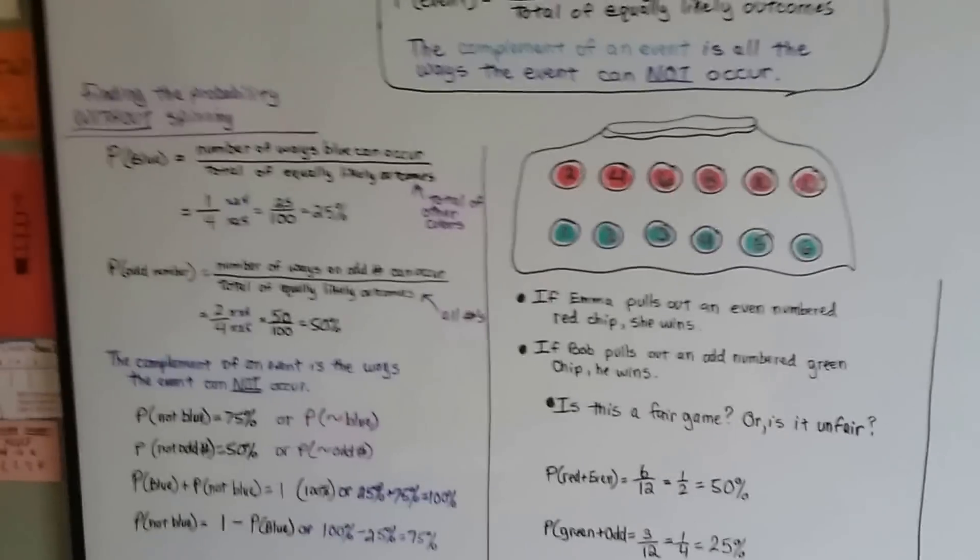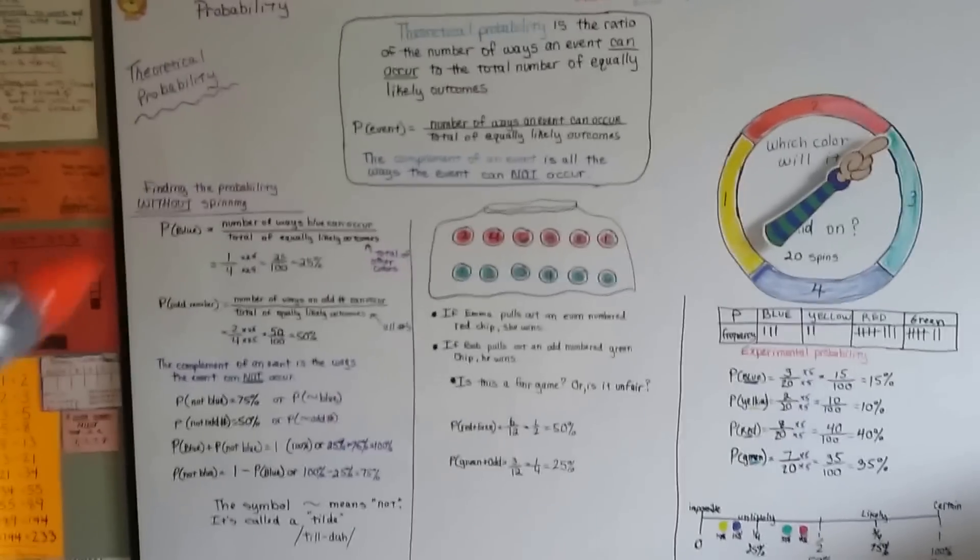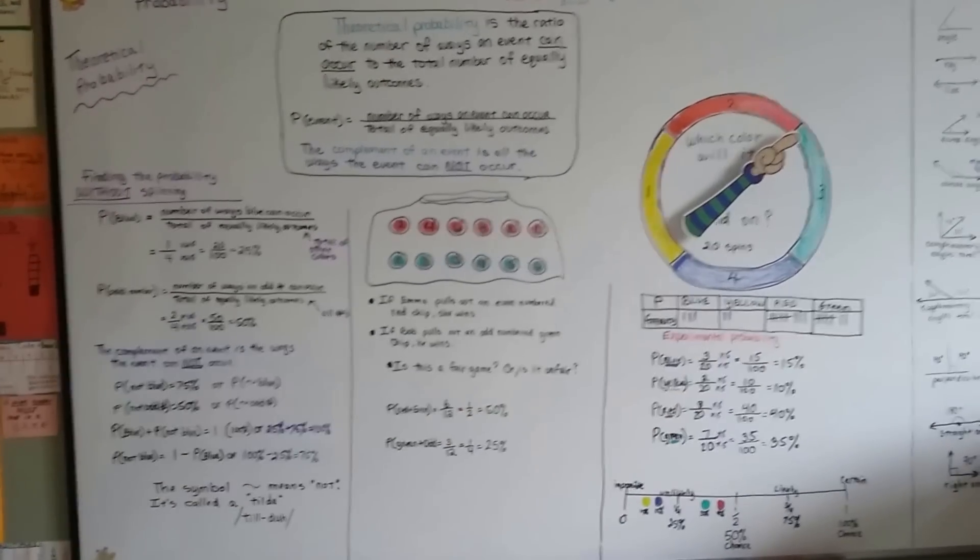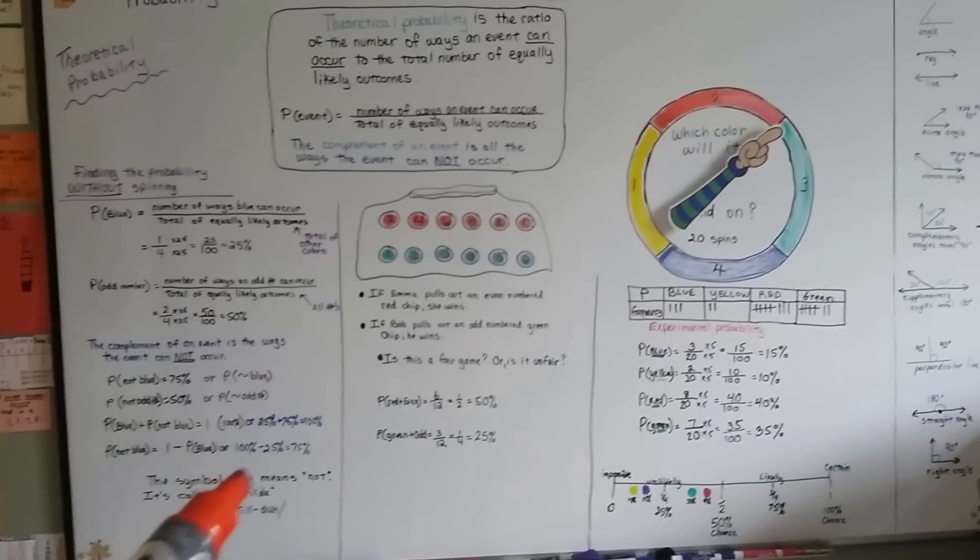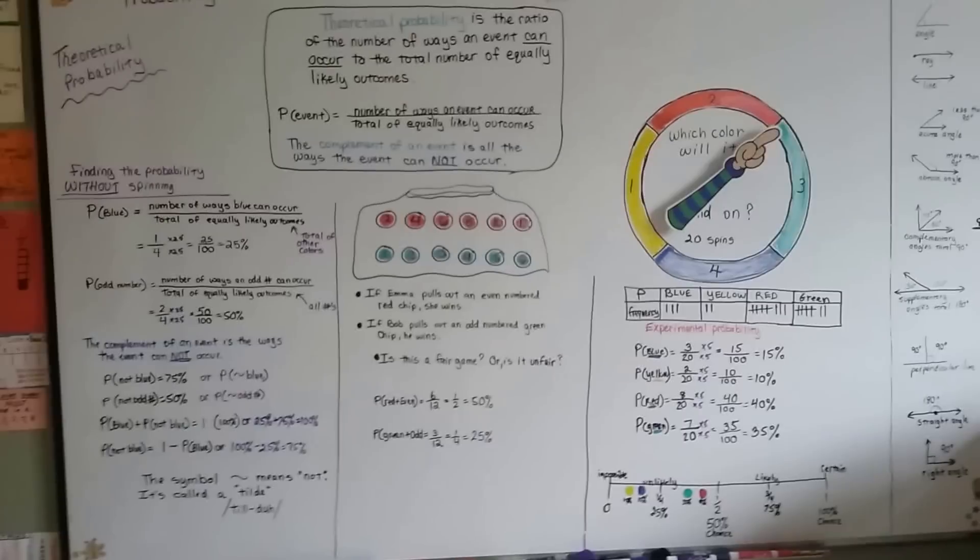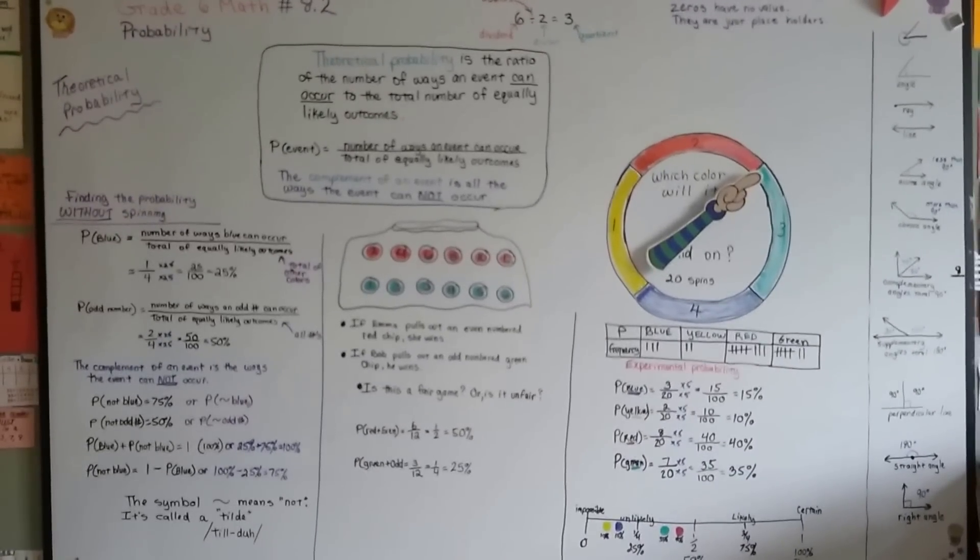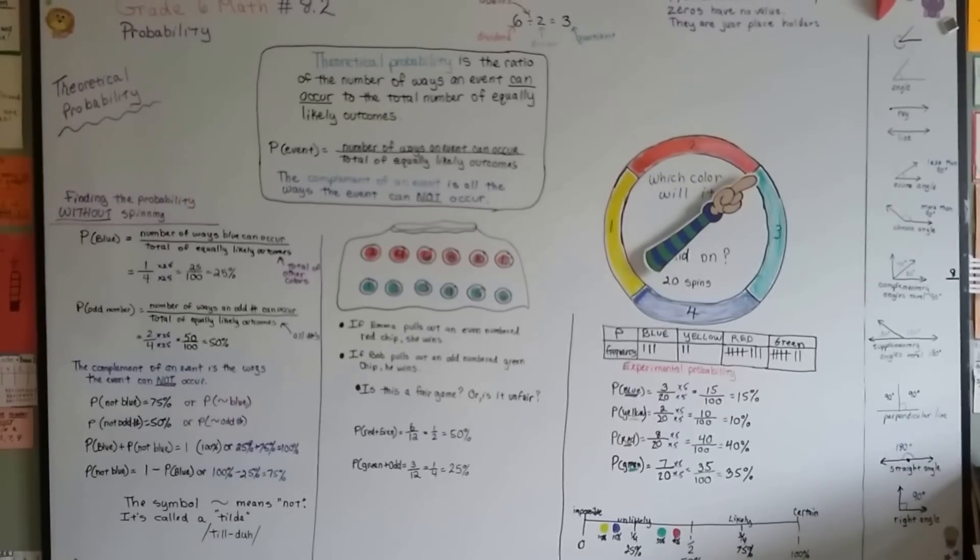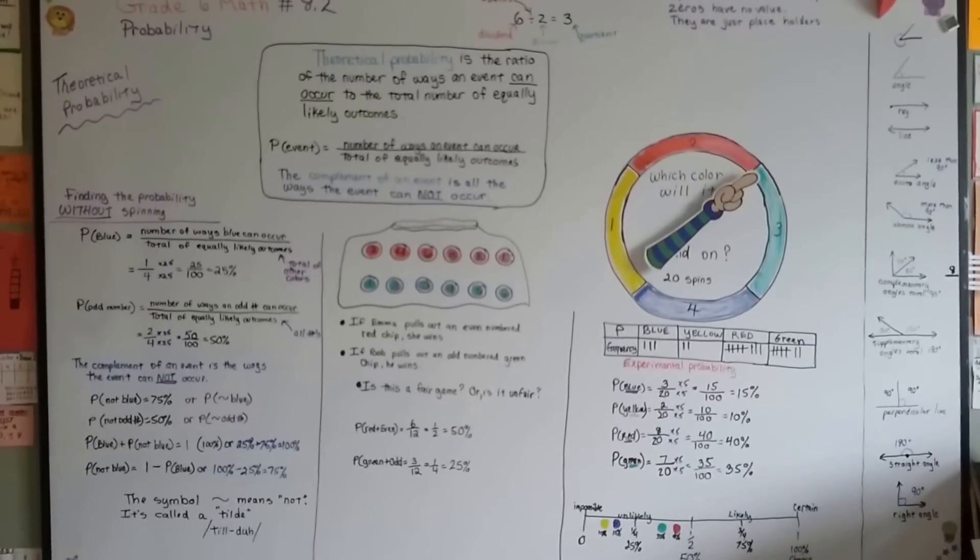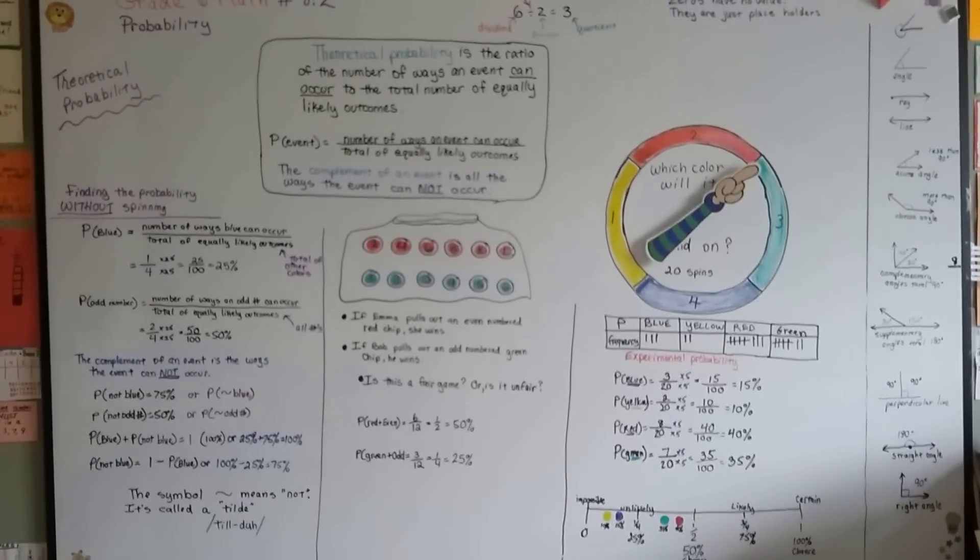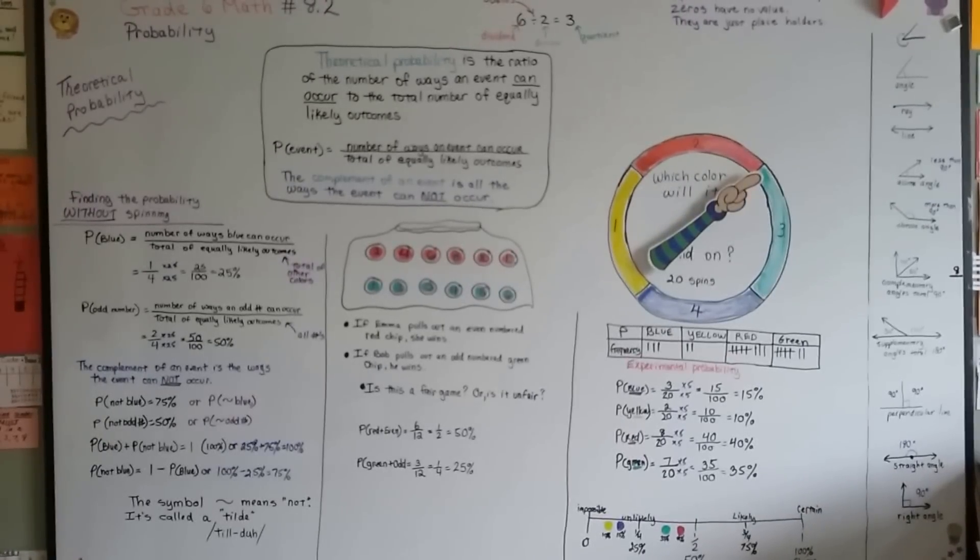So now you understand theoretical probability and how we don't need to roll any dice, or run any races, or spin any wheels to find our theoretical probability. For experimental, we do, but not for theoretical. And now you know the complement is the opposite of the probability. And you also know the little swirly line means a tilde, and it means not. I'll see you next video. I hope this explained it well, because this is just the tip of the iceberg for doing math probability. And it's just a 6th grade level to get you started so that you can begin to understand it. I hope I made it clear enough that it wasn't too confusing. We're going to continue talking about this in the next video. We're going to compare the theoretical and the experimental. I hope to see you there. Bye.